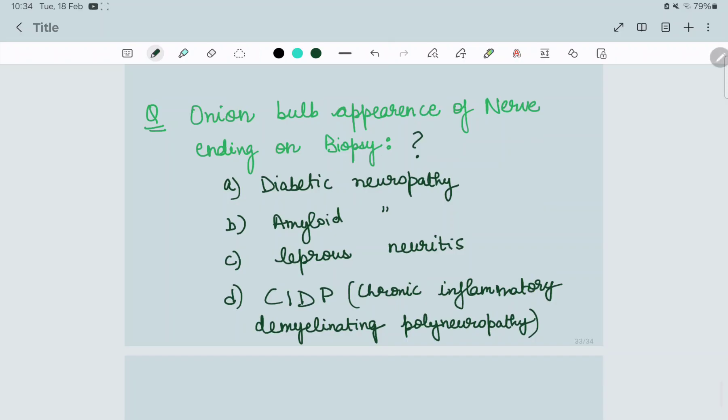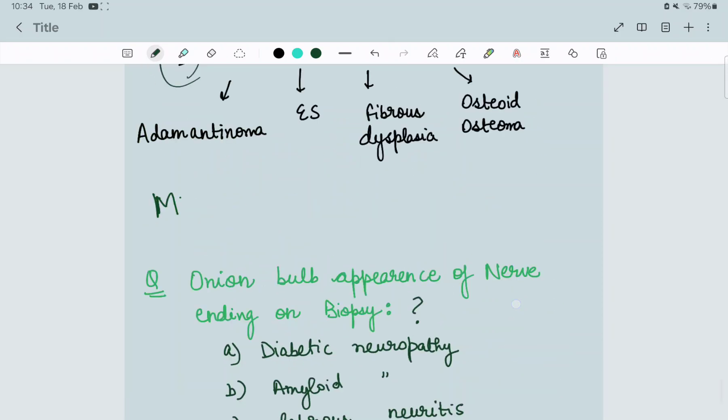Now I want you to answer this question for me: onion bulb appearance of nerve endings on biopsy. A) Diabetic neuropathy, B) Amyloid neuropathy, C) Leprous neuritis, or D) CIDP (chronic inflammatory demyelinating polyneuropathy). This is a difficult question, a one-liner question.